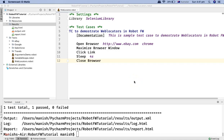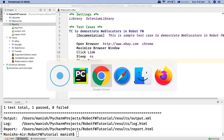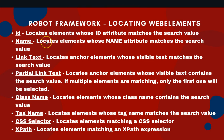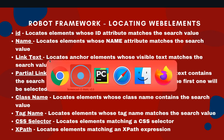Hello guys, welcome to Robot Framework tutorial. In this tutorial, I'm going to explain how you can click an element using link text or partial link text. In the previous tutorial, we identified web elements using ID and name. Now in this tutorial, I'll explain how you can find an element using link text or partial link text and click it using Robot Framework.